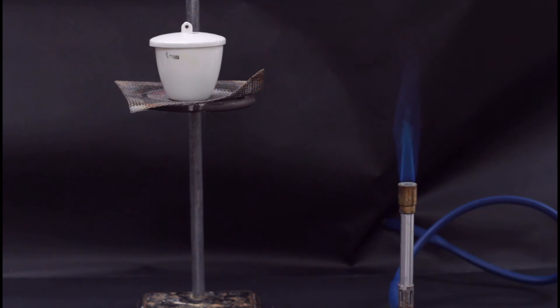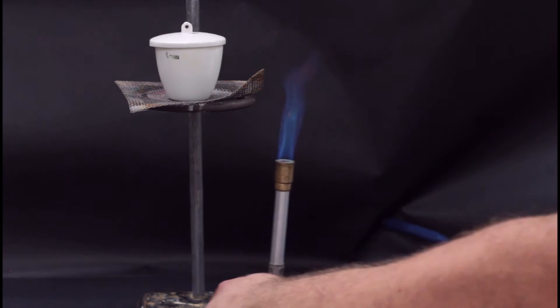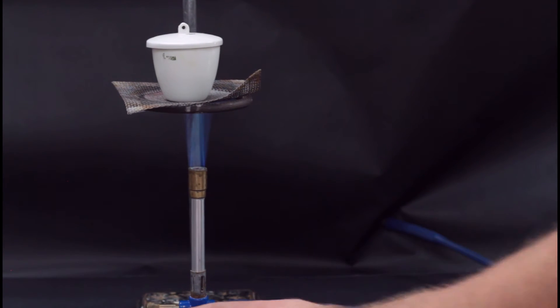Light your Bunsen burner and begin heating the crucible. Heat it for about five minutes and then check the mass.